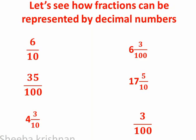Let us see how fractions can be represented by decimal numbers. First one: 6 by 10. In 10 there is 1 zero, so in the decimal number there will be 1 decimal place after the decimal point. So 6 by 10 is equal to 0.6 in decimal form. Next, 35 by 100 — in 100 there are 2 zeros, so when we write in decimal it will be 0.35.